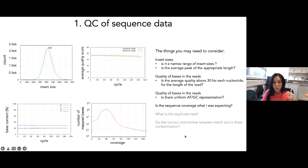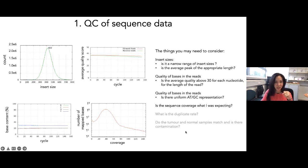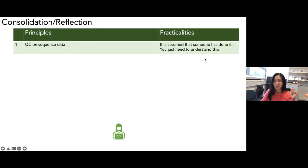Additional QC items include the duplicate rate — aim for less than 20% — and confirming that the tumor and normal samples match with no contamination from another sample, because contamination affects your ability to call mutations. This tends to happen behind the scenes, and it is assumed that someone has done it. Understanding these principles is important even if you're not looking at them directly.